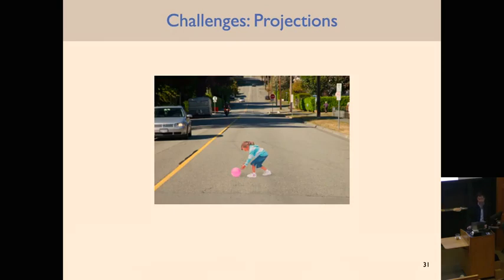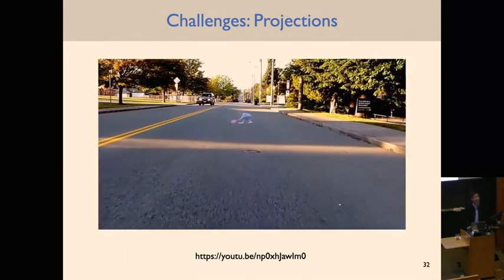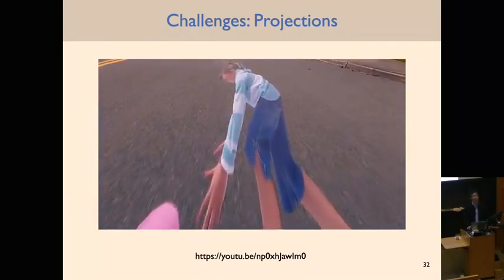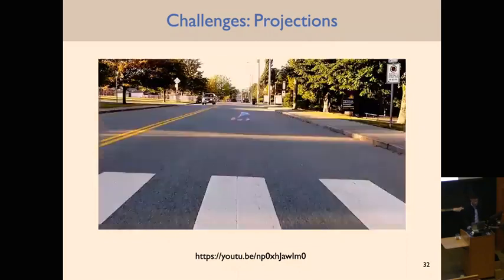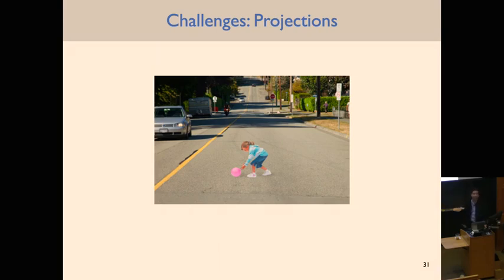Let's go through some of the challenges that make vision hard in robotics. One challenge has to do with projections. A 2D painting on the ground, viewed from the right angle, looks 3D — your mind perceives it as three-dimensional because a 2D painting is being projected onto your retina. This was placed in a school area to make drivers slow down.